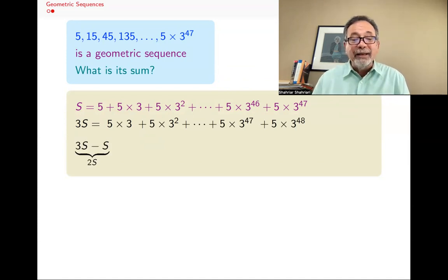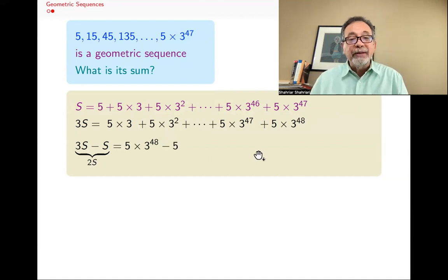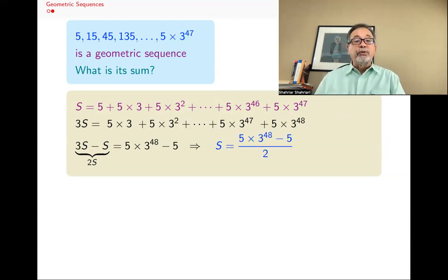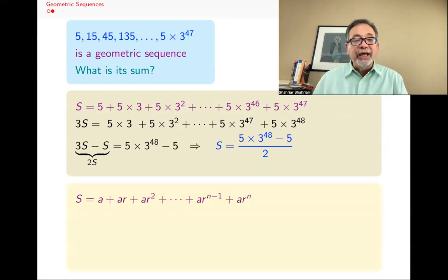And then I subtract them. 3S - S is actually 2S. But when I subtract here, again, almost everything cancels except this last term, 5×3^48, and that first term, 5. And I will get 5×3^48 - 5. But this was 2S. So what's S? S is going to be half of that. So I found a formula for what S is, and we can do that in general.